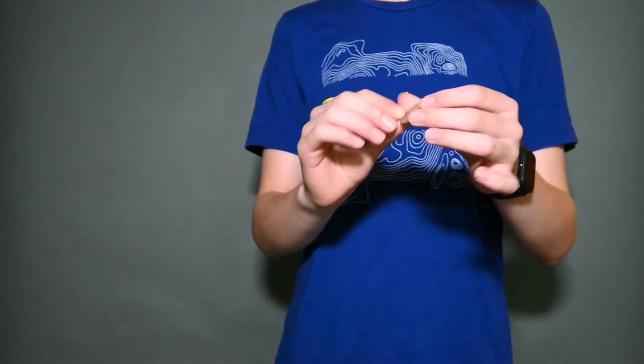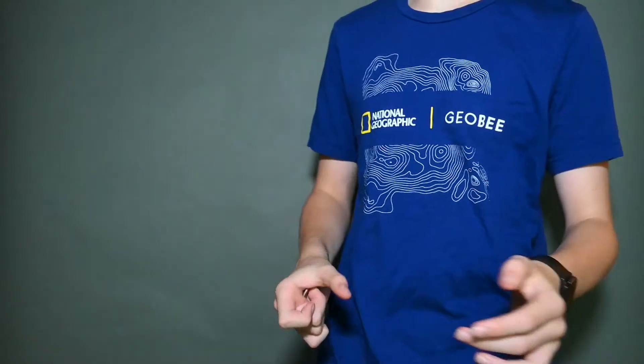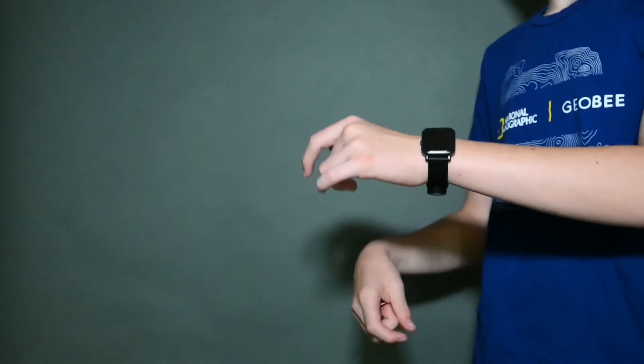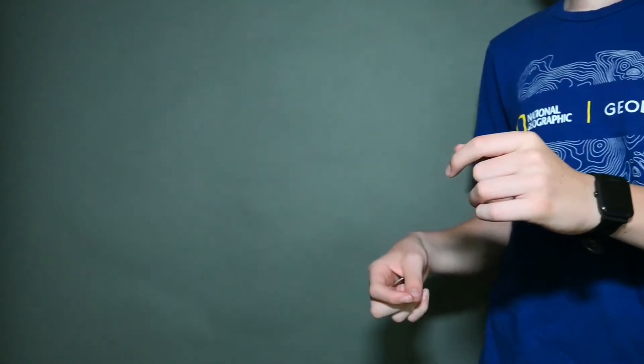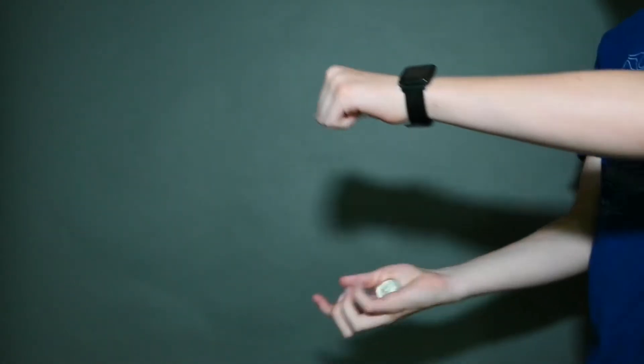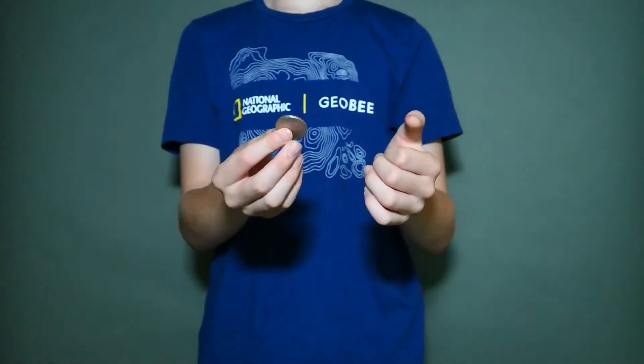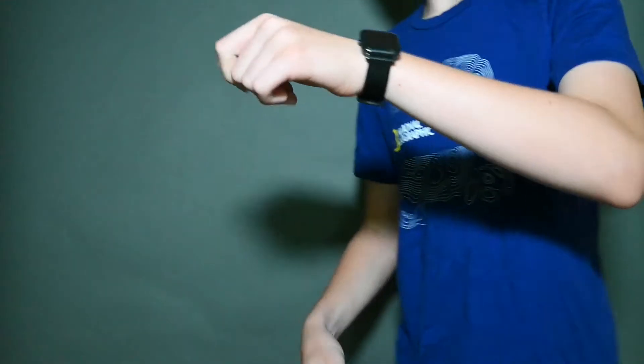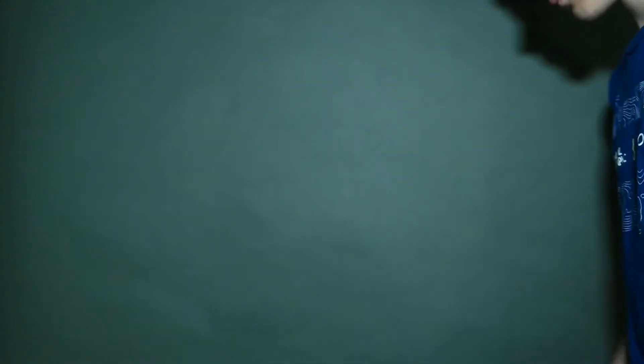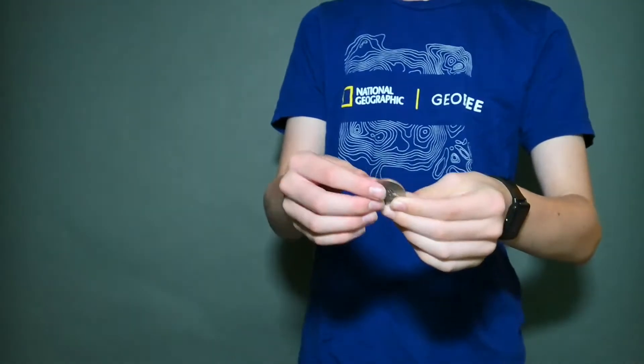Alright guys, so now for the first trick, the anti-gravity coin pass. I'm sure most of you have seen this one in performance, although you may not know how it's done. I'll teach you now. So it looks like this again. Well, you're supposed to catch it, obviously, like that. It's a really cool effect, especially when you can get your hands a little bit farther apart. It really takes practice guys.